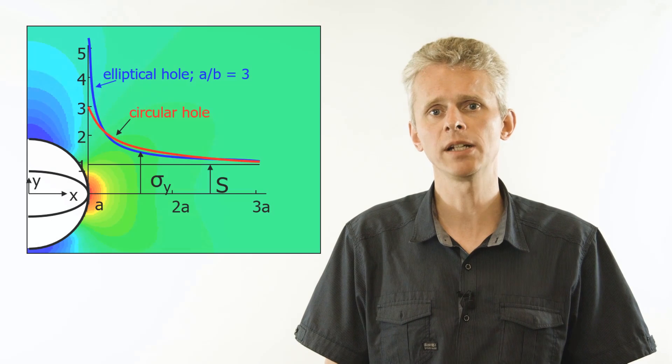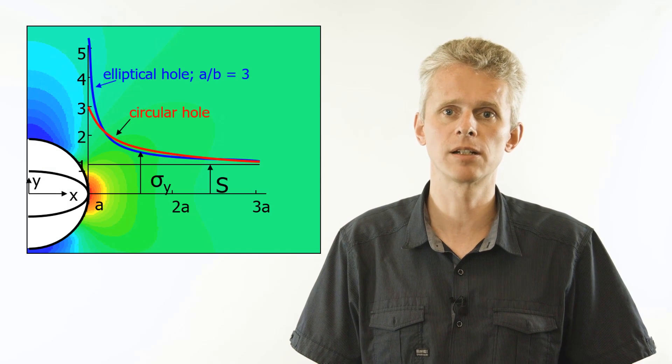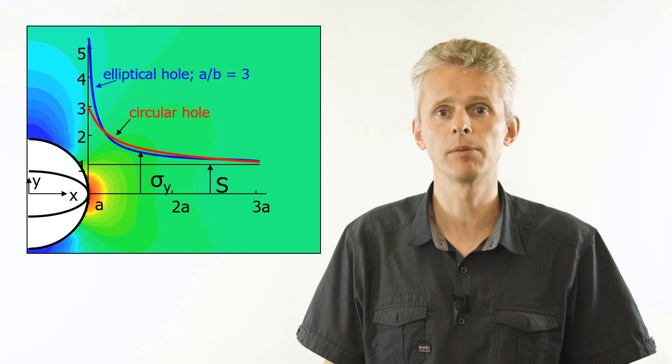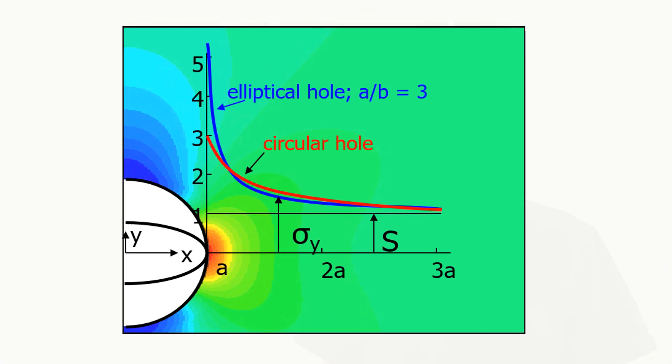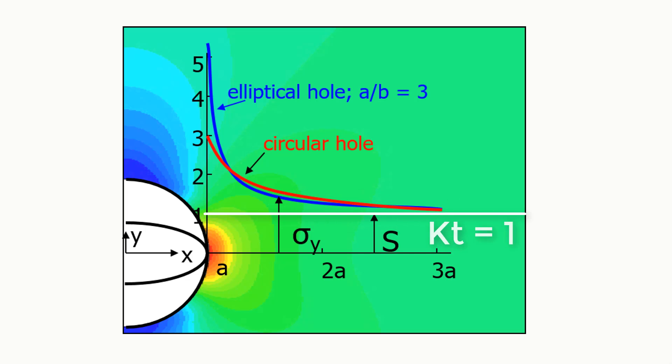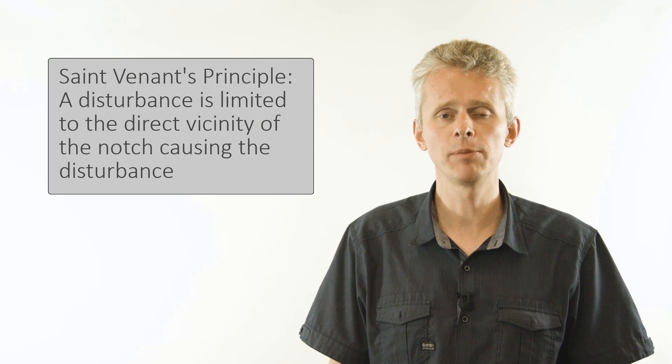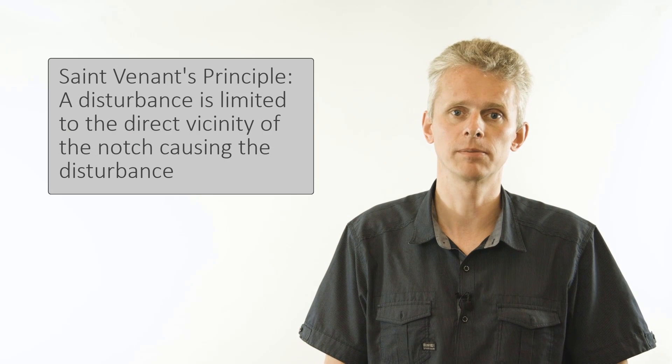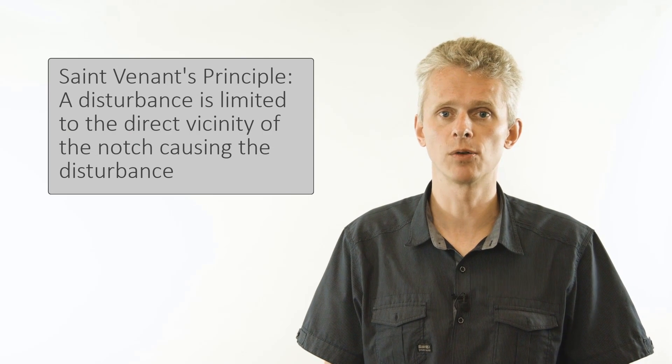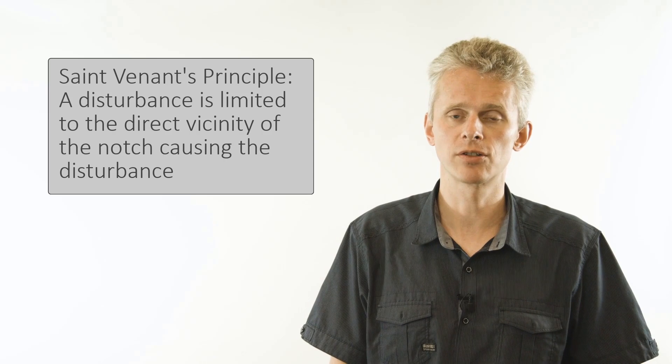If we now zoom in to the region of the notch root, we can see how the peak stress depends on the dimensions of the major and minor axes of the ellipse. What is also clearly visible is that the gradients away from the notch root are approximately the same and that they rapidly reduce to the applied stress S. This illustrates what is called the Saint-Venant Principle. Any disturbance of the stress field by a notch is limited to the direct vicinity of that notch. Further away from the notch, the presence of that notch is hardly observed in the stress field.